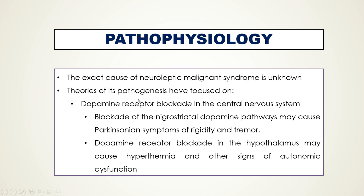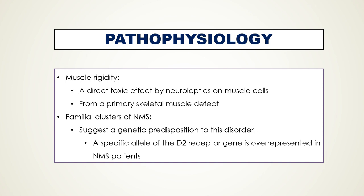The exact cause of Neuroleptic Malignant Syndrome is unknown. Because of the class of drugs associated with NMS, most theories of its pathogenesis have focused on dopamine receptor blockade in the central nervous system. Blockade of the nigrostriatal dopamine pathways may cause Parkinsonian symptoms of rigidity and tremor, while dopamine receptor blockade in the hypothalamus may cause hyperthermia and autonomic dysfunction such as fluctuations in blood pressure and heart rate.